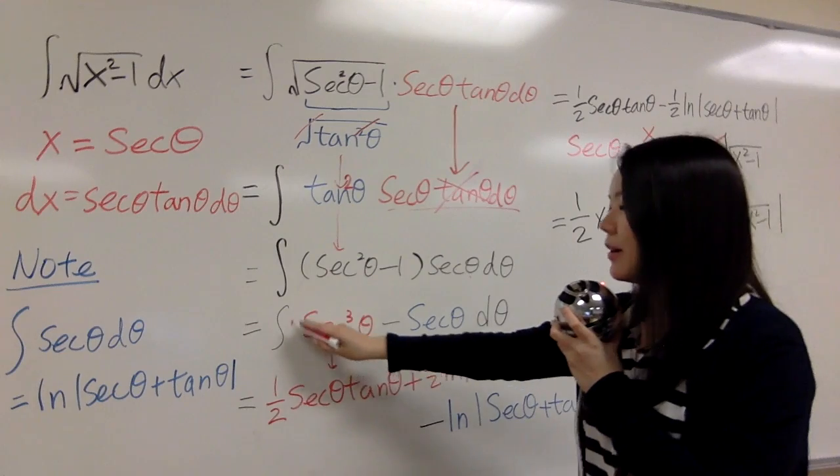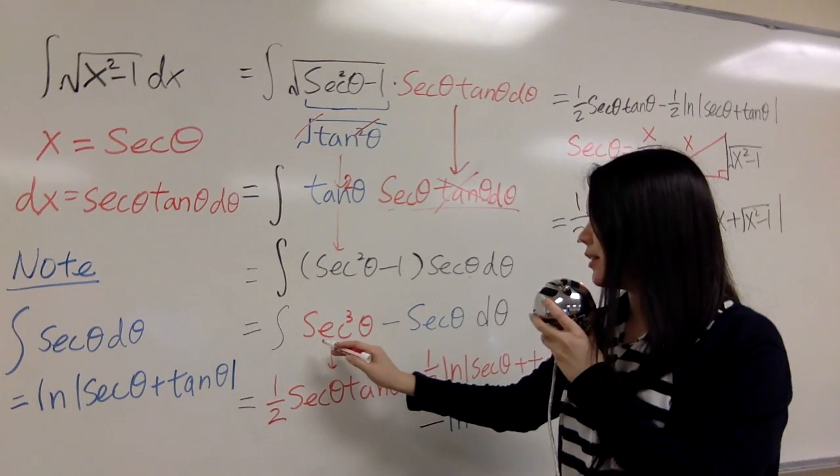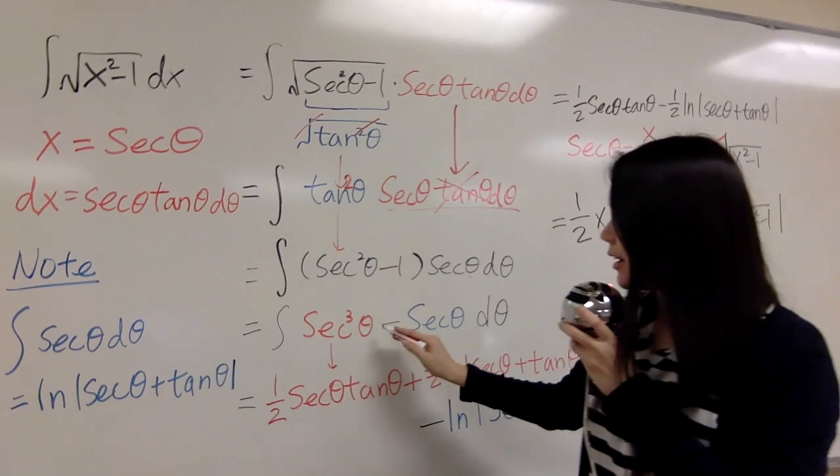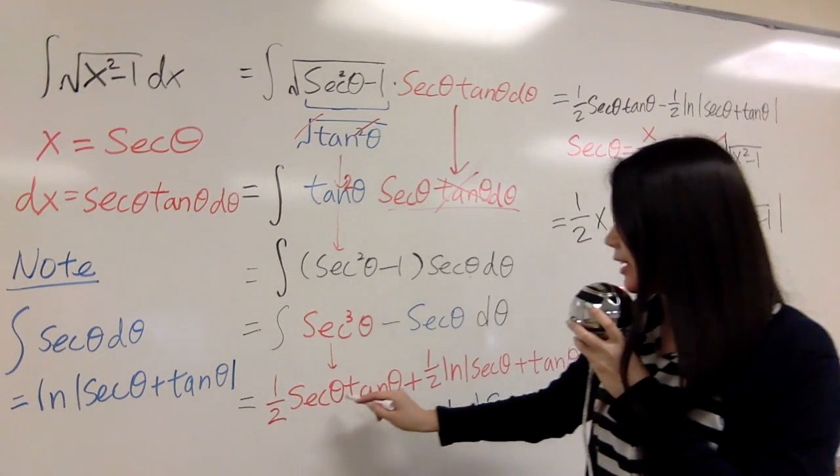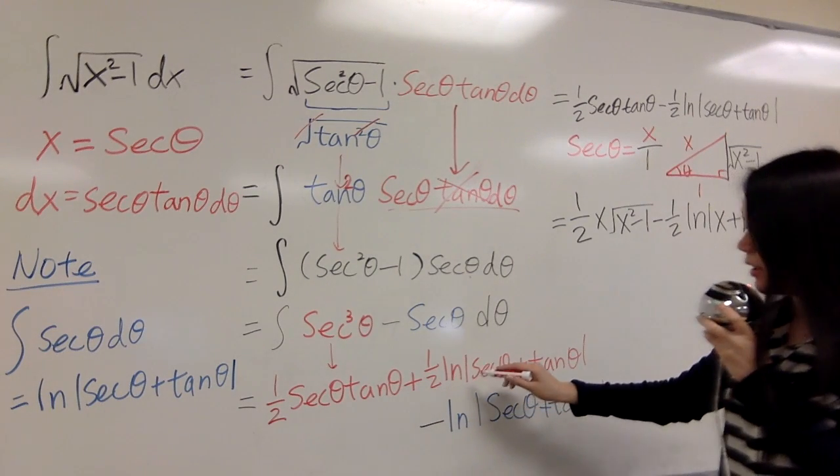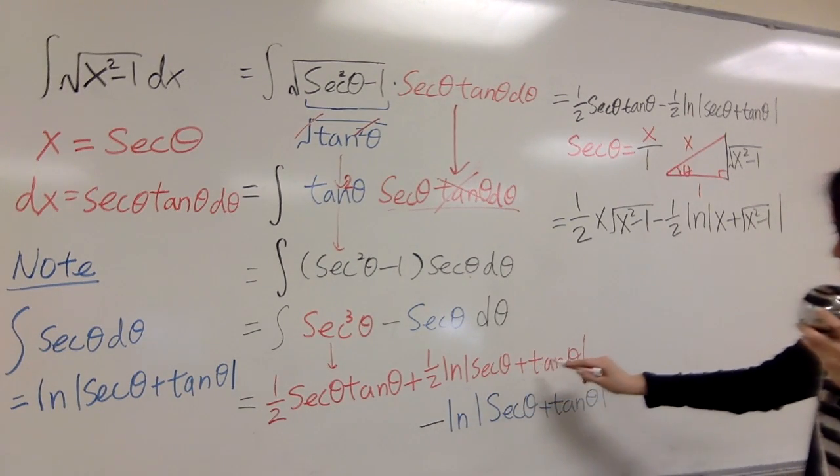For this one, you can check out description on how to integrate secant cubed theta, and what we got is a half secant theta tangent theta plus a half ln secant theta plus tangent theta.